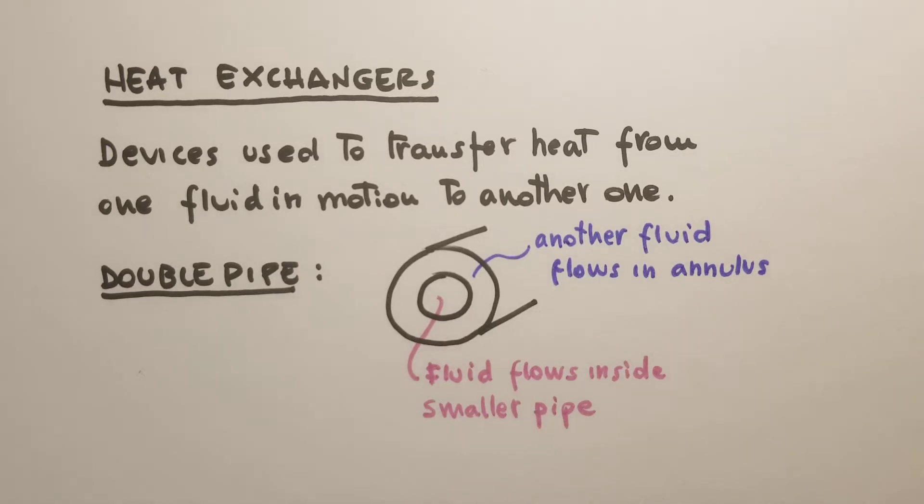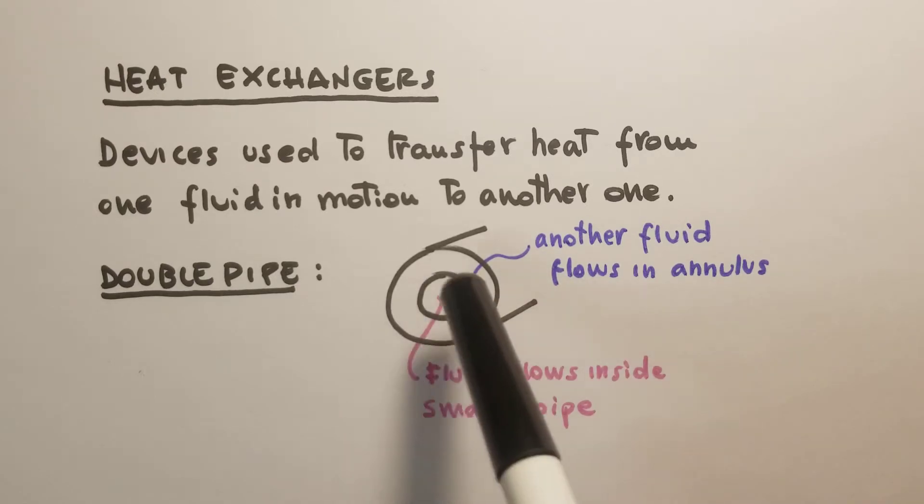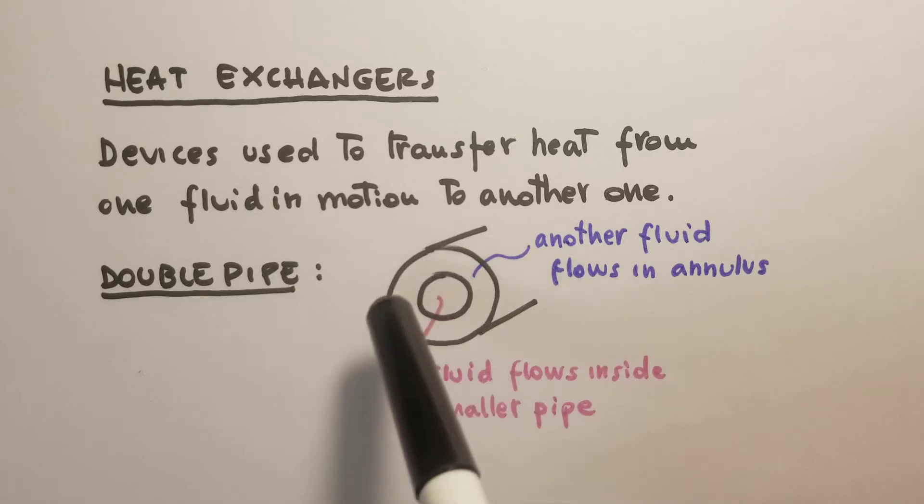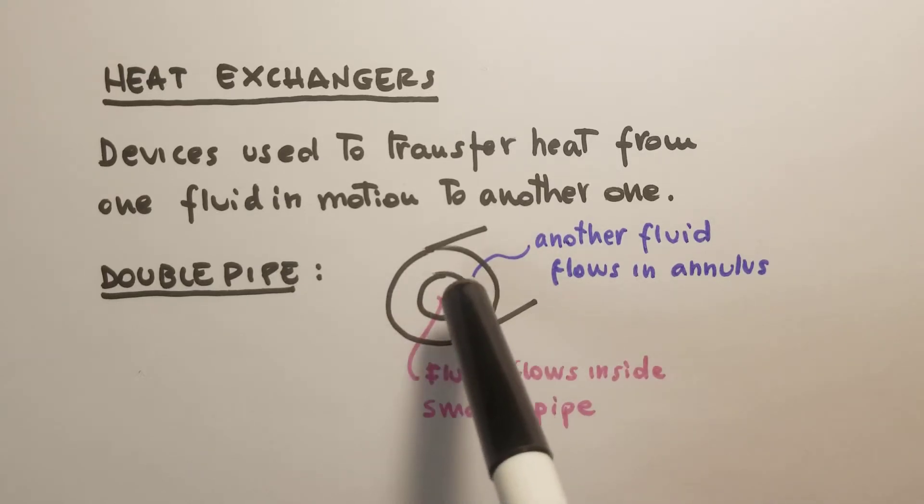Heat exchangers are engineering devices used to transfer heat from one fluid in motion to another. A typical example is a double pipe heat exchanger where one fluid flows inside a straight pipe, and around it there is another flow of fluid that goes through this annular pipe, so there is heat exchange between these two fluids.